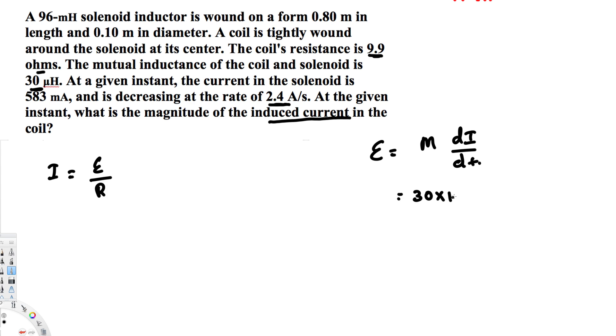Let's go ahead and do that. So this is going to be 30 times 10 to the power of minus 6 henrys, times the changing current rate is going to be 2.4 amperes per second.